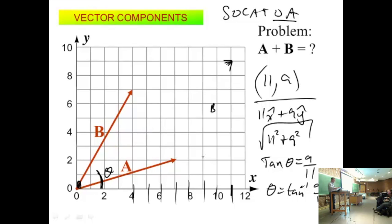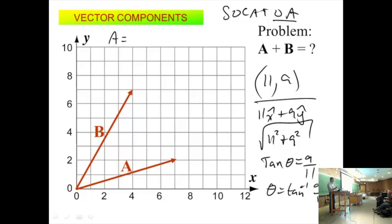But if I just gave you that A is, what is it, 7, 2? So 7 X hat plus 2 Y hat. And B is 4 X hat plus 7 Y hat. If I just gave you those numbers and you don't have a grid, you could still do all the same calculations and all the same thing. Because what did we do? How did we get this 11 and this 9? Ultimately, what did we do? If we don't have the picture, what did we do? We just added the X component. So 7 plus 4 is 11. And 2 plus 7 is 9.